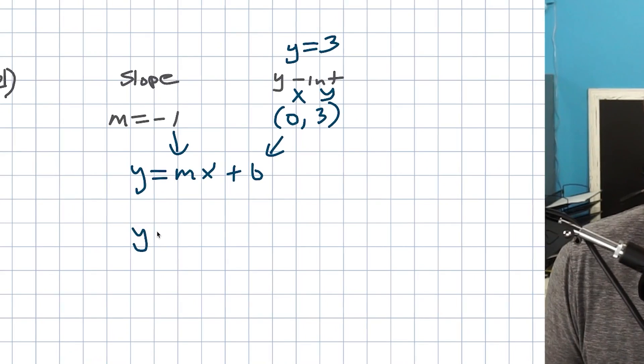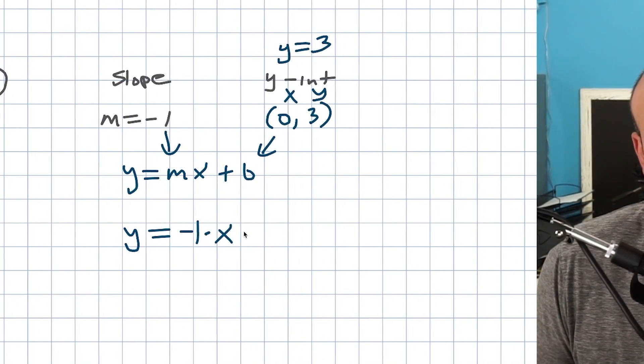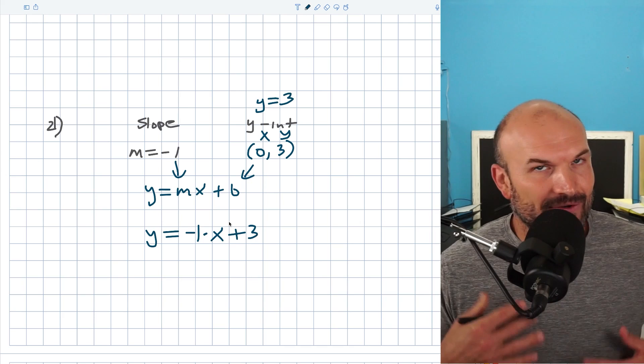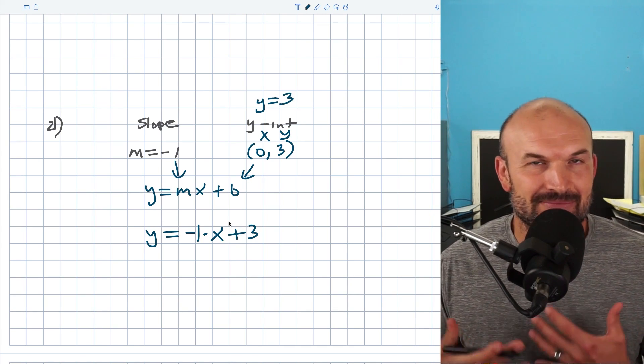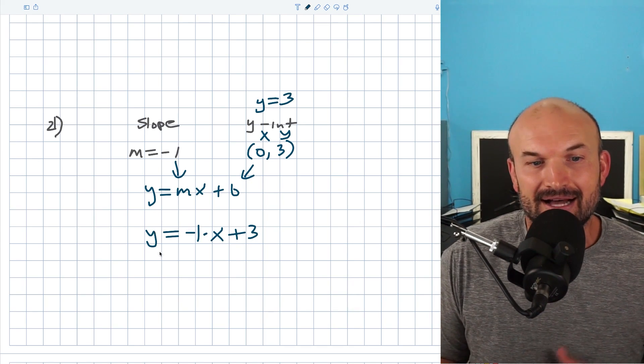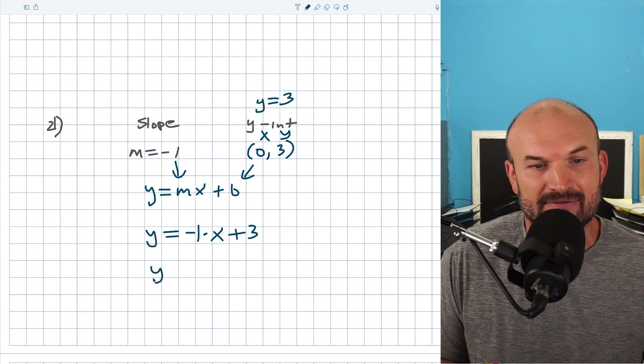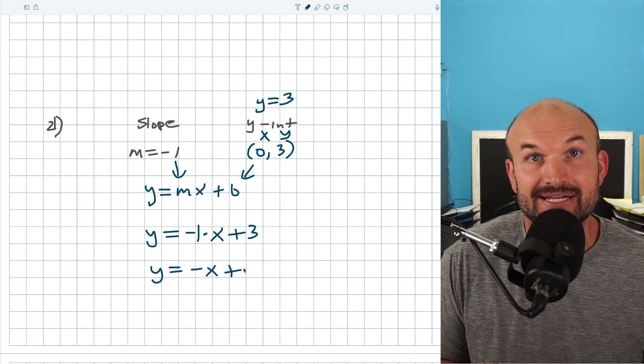So now I can rewrite this equation as y equals negative 1 times x plus 3. But I think if you have some experience, you recognize we don't really use multiplying by 1 or negative 1 a lot. A lot of times, we'll just write that as negative x plus 3. So I can write my final equation as negative x plus 3.